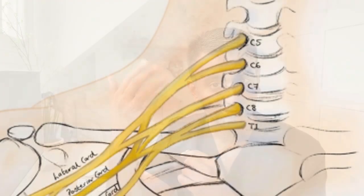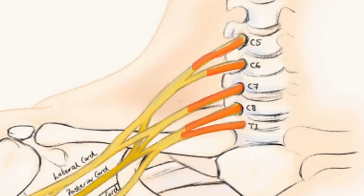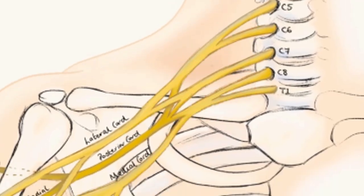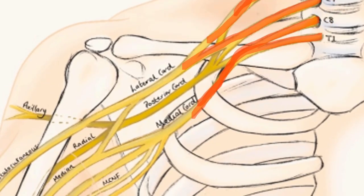But this is not entirely accurate, because the median nerve obviously comes from the brachial plexus. The upper trunk, middle trunk, and lower trunk form the cords, and then the lateral cord and the medial cord both contribute to the median nerve, and then it comes down your arm.